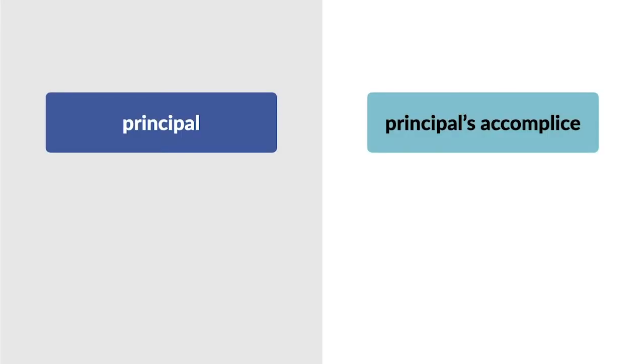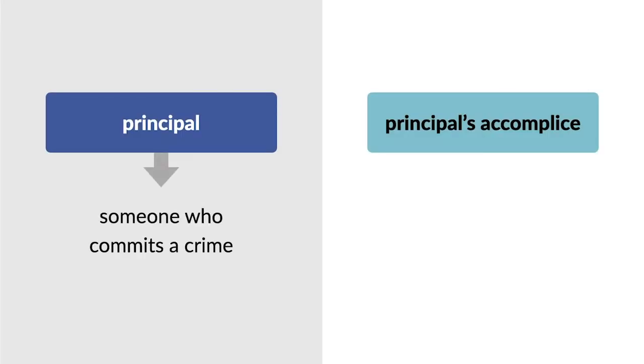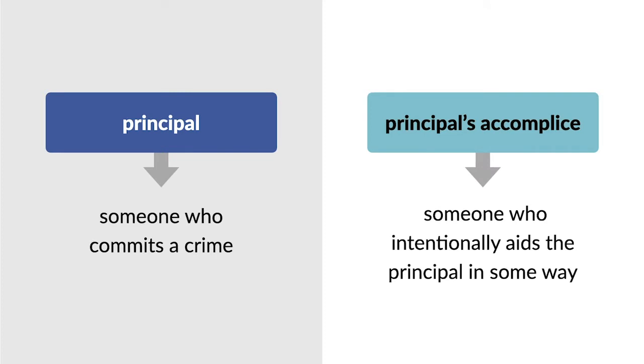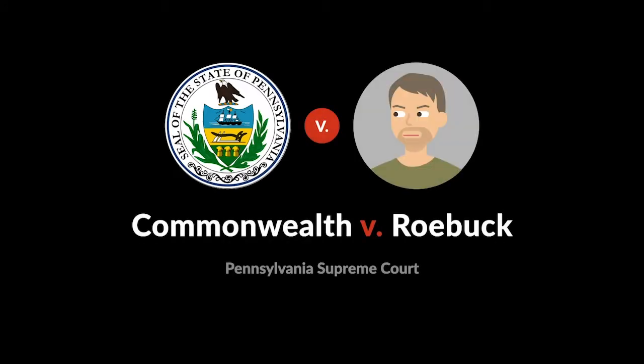In criminal law, a principal is someone who commits a crime, and someone who intentionally aids the principal in some way is the principal's accomplice. In Commonwealth v. Roebuck, the court explored the scope of an accomplice's liability for unintended consequences of the principal's actions.